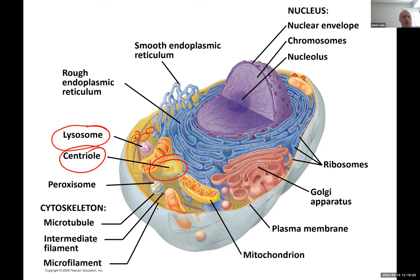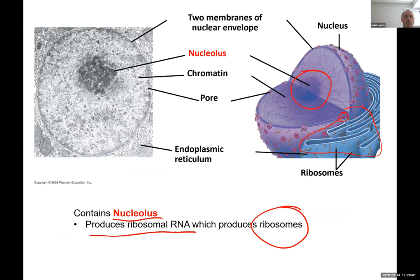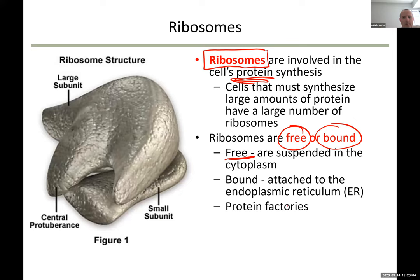The difference between bound and free ribosomes: the bound ribosomes are attached to the endoplasmic reticulum. These ribosomes produce proteins that need to be rearranged or folded. Ribosomes produce proteins in their primary structure — from primary structure, these proteins need to be rearranged into secondary, tertiary, or quaternary structure.